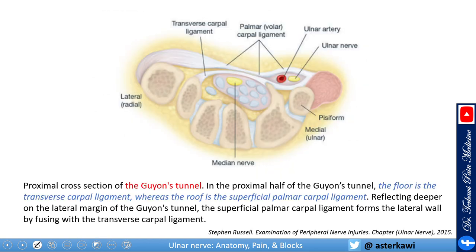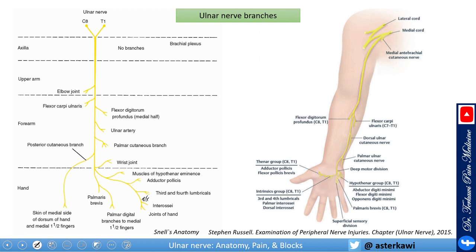Going further down at the distal forearm, you can see how superficial the ulnar nerve and artery are, just underneath the flexor carpi ulnaris, all the way down to the wrist. This is called Guyon's tunnel. The floor of Guyon's tunnel is formed by the transverse carpal ligament and the roof by the palmar carpal ligament, and the ulnar nerve continues running with the ulnar artery.